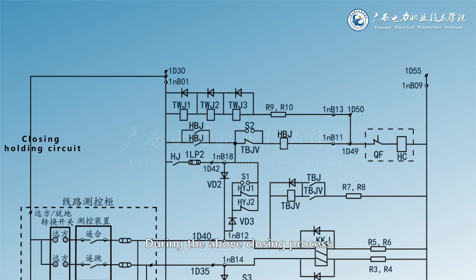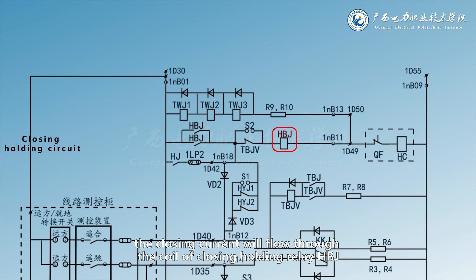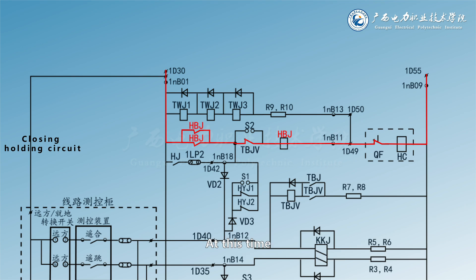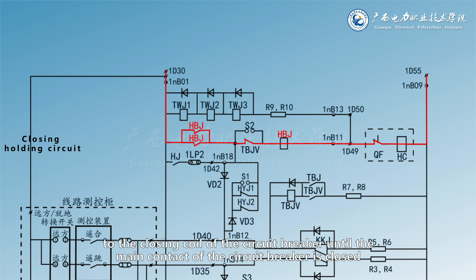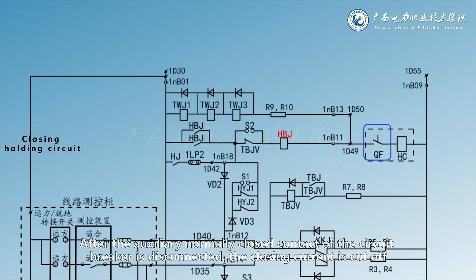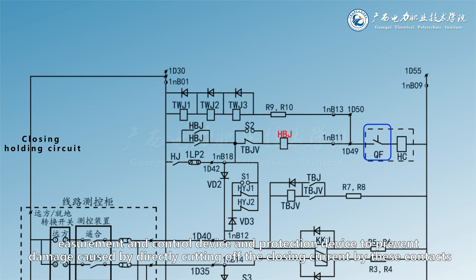During the above closing process, whether manual closing or automatic REC closing, the closing current will flow through the coil of closing holding relay HBJ. Therefore, HBJ acts and self-holds by its two pairs of parallel normally open contacts. The closing current can flow from the two pairs of parallel normally open contacts of HBJ to the closing coil of the circuit breaker until the main contact of the circuit breaker is closed. After the auxiliary normally closed contact of the circuit breaker is disconnected, the closing current is cut off, so as to ensure the reliable closing of the circuit breaker. At the same time, it also protects the contacts of the local operation switch, measurement and control device and protection device to prevent damage caused by directly cutting off the closing current.